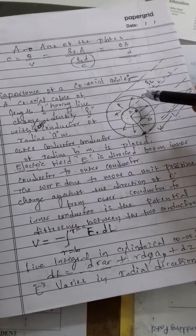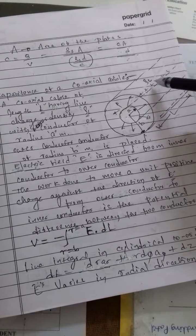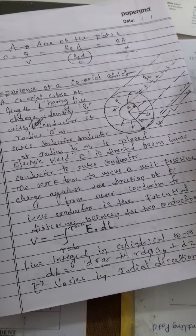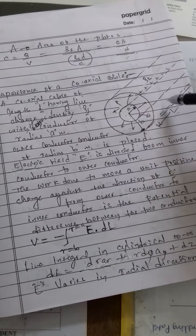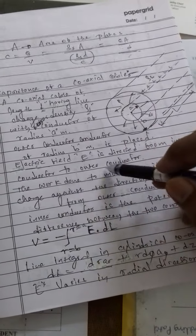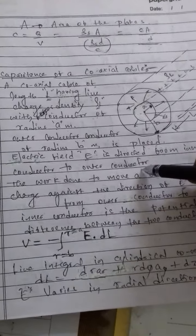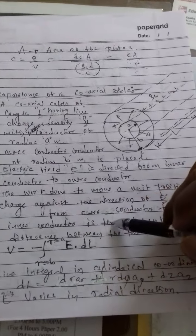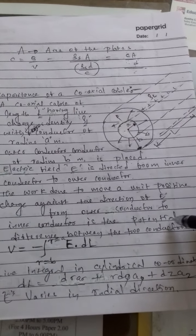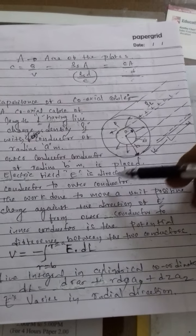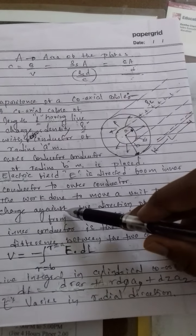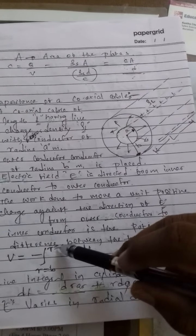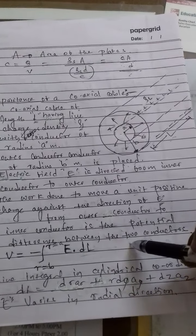The electric field is directed from the inner conductor to the outer conductor. The work done to move a unit positive charge against the direction of the electric field, from the outer conductor to the inner conductor, is the potential difference between the two conductors.